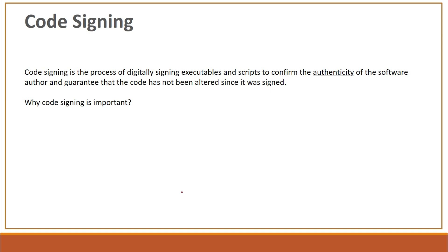Code signing is a process of digitally signing any executable, any script, any document, or any code — anything for which you want to provide authenticity for the author and maintain the integrity of your deliverables. This provides authenticity, integrity, as well as non-repudiation. Non-repudiation means that the signer cannot successfully claim that they did not sign the message, because ultimately they are maintaining the private key and ensuring that it remains secret.